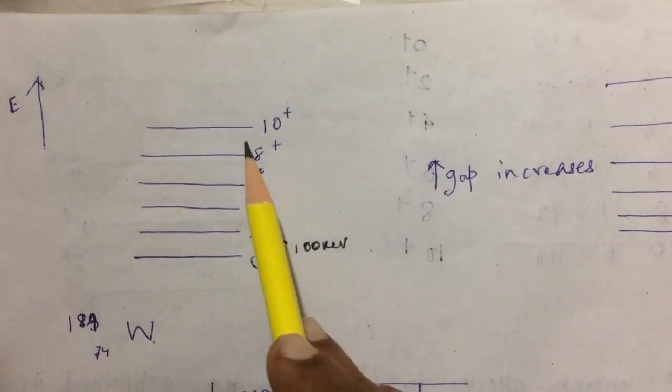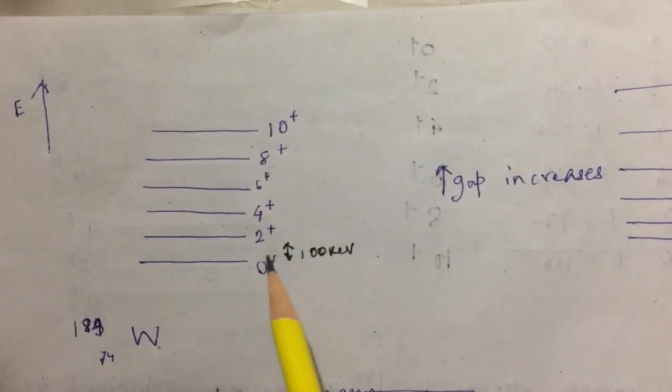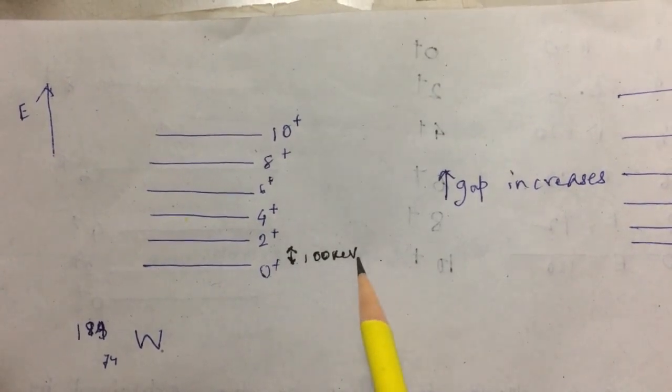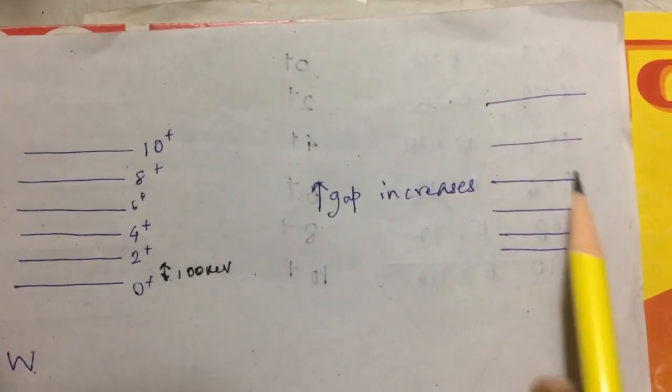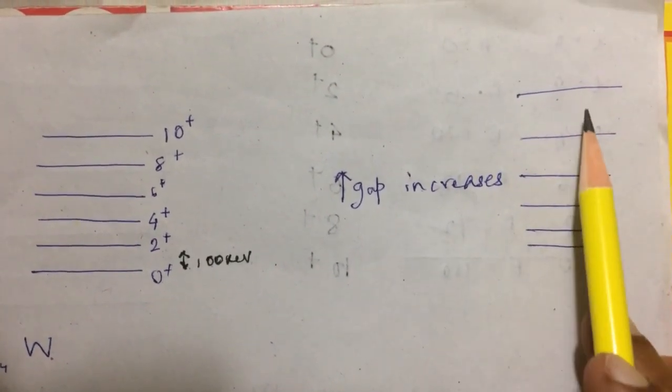The spacing of these energy levels are not uniform. The energy gap between 0+ and 2+ is 100 keV, and then the energy gap increases. I have redrawn the energy gaps here.